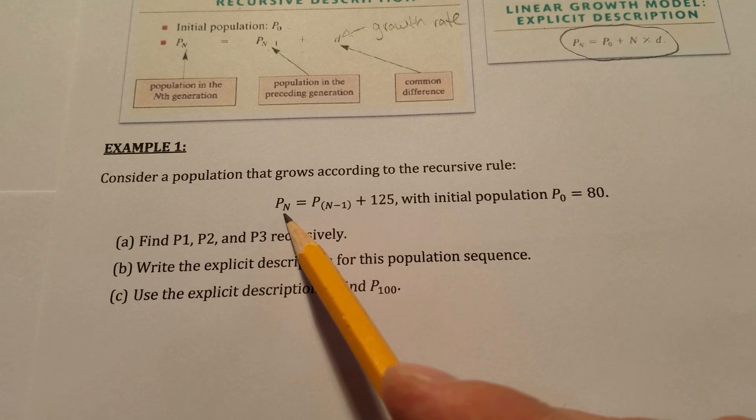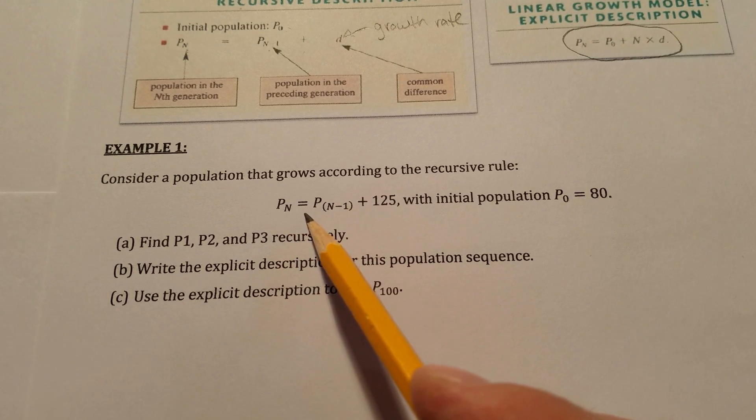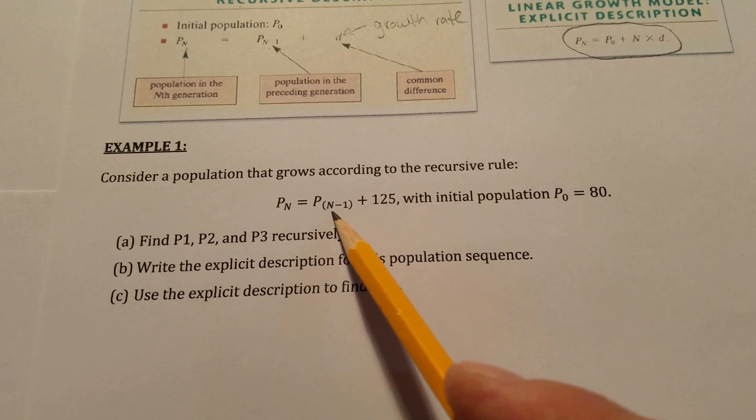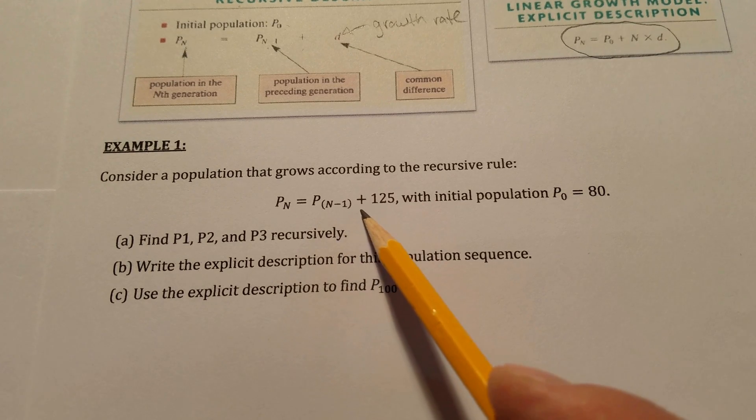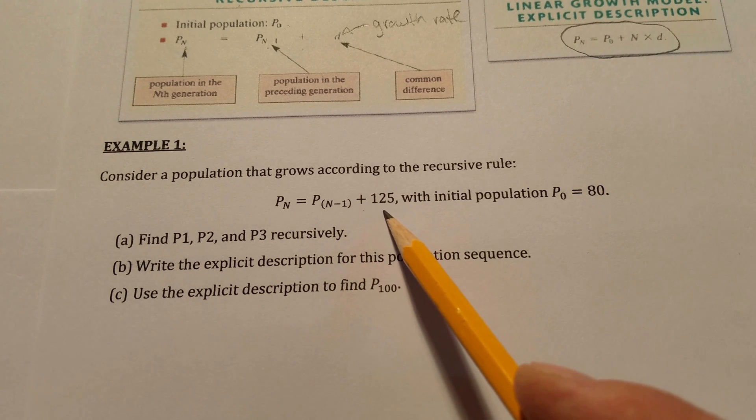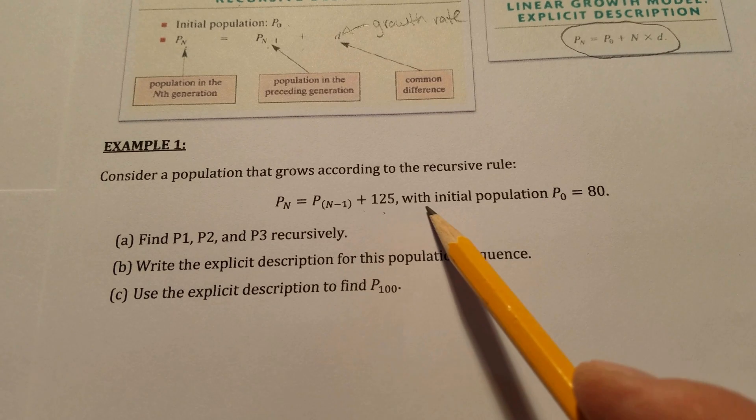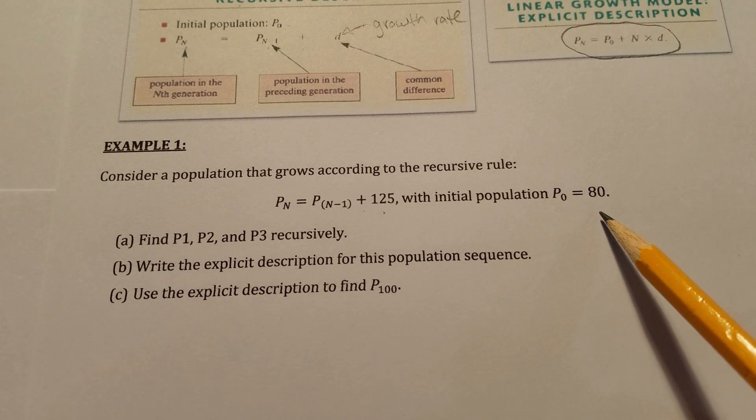P_n, which is the population of generation n, equals P_(n-1), the population of the previous generation, incremented by 125, with an initial population P₀ of 80.